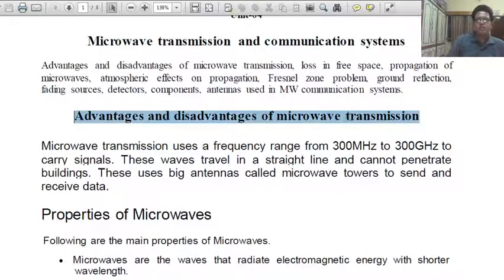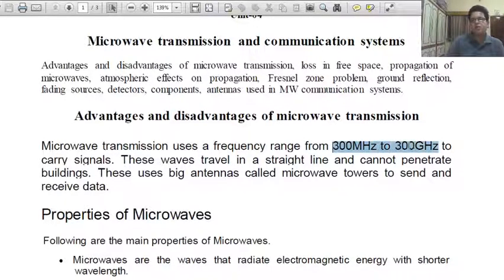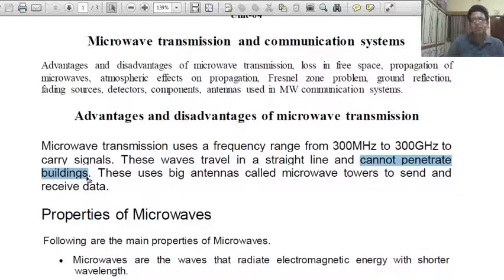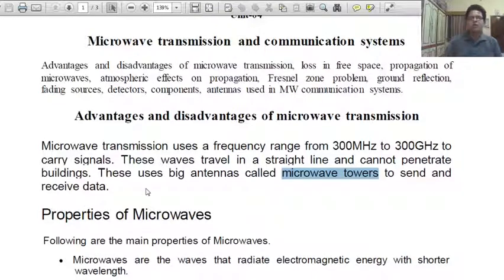The first topic is advantages and disadvantages of Microwave Transmission. Microwave Transmission uses a frequency range from 300 MHz to 300 GHz to carry signals. These waves travel in a straight line — a very important point — and cannot penetrate buildings, which is a disadvantage. Microwave Transmission uses big antennas called Microwave Towers to send and receive data.